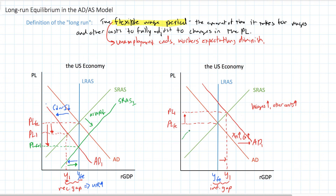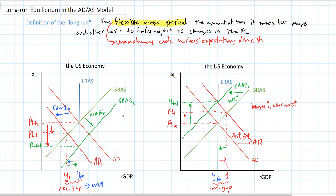As wages and other costs rise in the long-run, aggregate supply shifts inward until the economy returns to its full employment level. This is called self-correction. Inflationary gaps will be corrected in the long-run as wages adjust to the level of aggregate demand and prices in the economy. We end up with a new full employment price level and the original full employment level of national income. This model is called the long-run self-correction model.